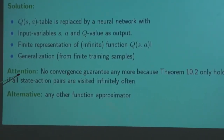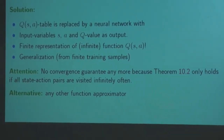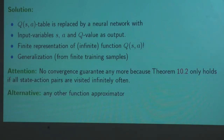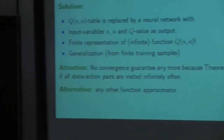The downside is we have no more convergence guarantee, because we are no longer able to visit all state-action pairs infinitely often. It doesn't need to be a neural network — you can use any function approximation technique. We will see in the next few lectures the least squares method, which is very powerful and related to neural networks but in many cases much easier to solve.